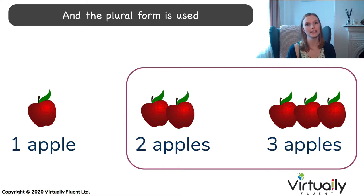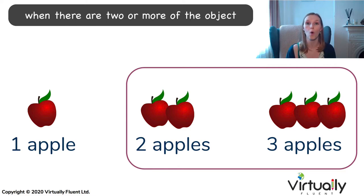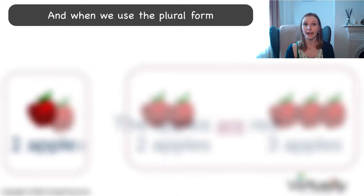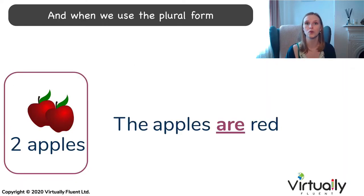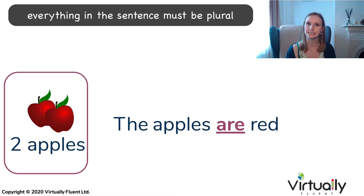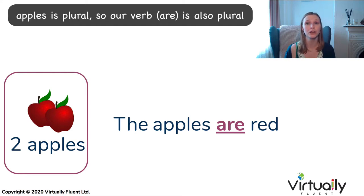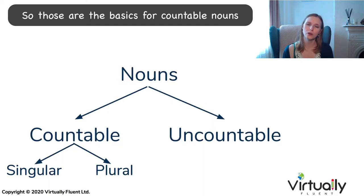The plural form is used when there are two or more of the object — two apples, three apples. When we use the plural form, everything in the sentence must be plural. In this example, 'the apples are red': apples is plural, so our verb 'are' is also plural. So those are the basics for countable nouns.